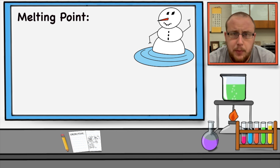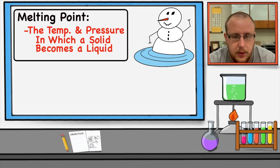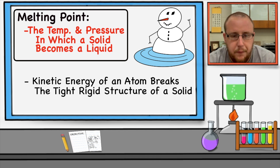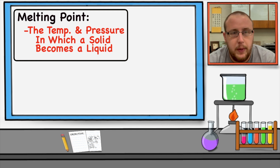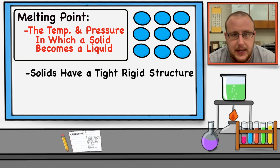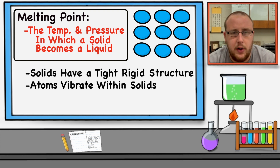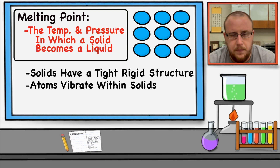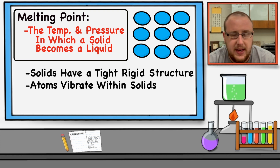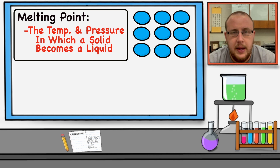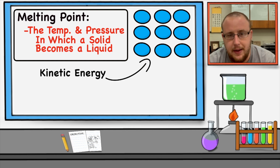Melting point is our first bulk scale property. The melting point of a substance is the temperature and pressure at which a solid becomes a liquid. This occurs when the kinetic energy of an atom breaks away from the tight, rigid structure of the solid state. Solids have a very tight and rigid structure, but despite appearing still, atoms within that solid are constantly vibrating back and forth — a minuscule but constant movement. These bonds between atoms are so tight they prevent the atoms from breaking away, giving the solid its rigid structure. As kinetic energy is added through higher temperature, those bonds eventually break, and the substance becomes a liquid.